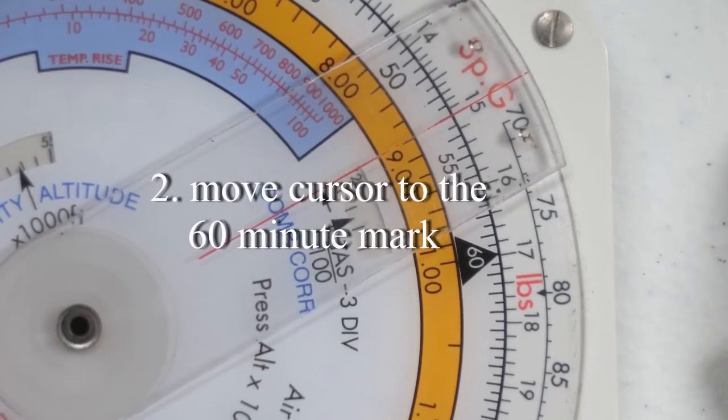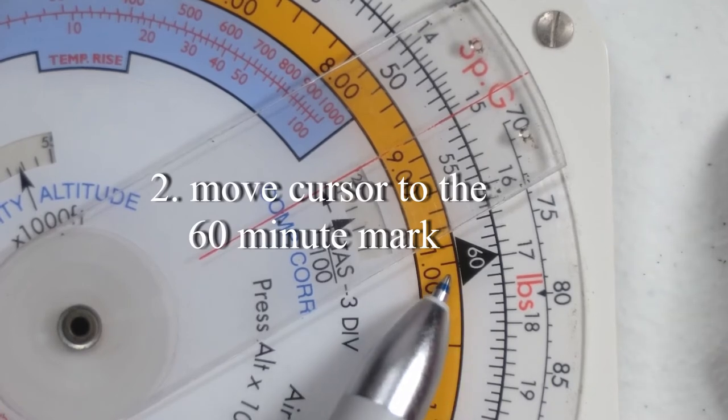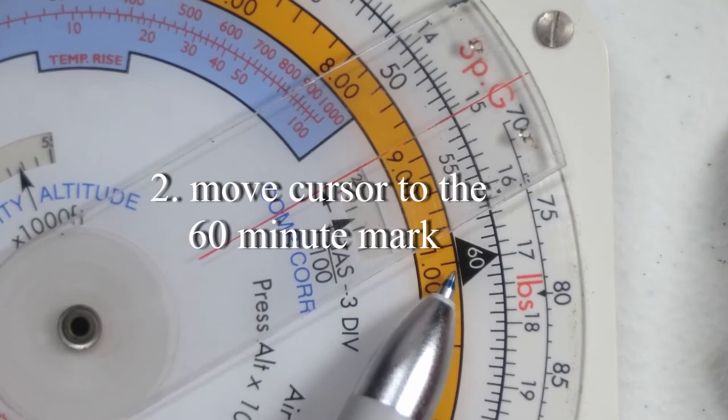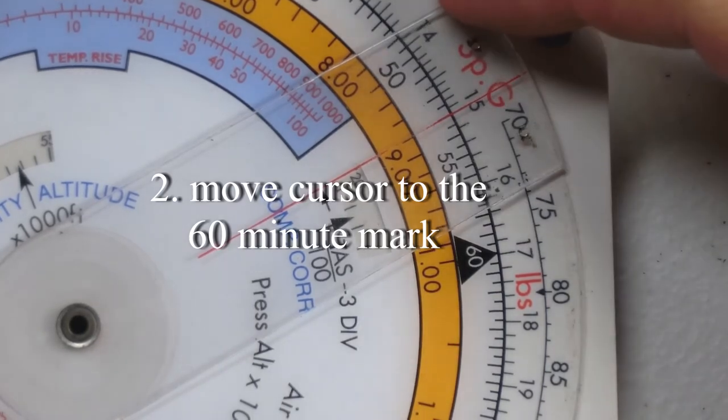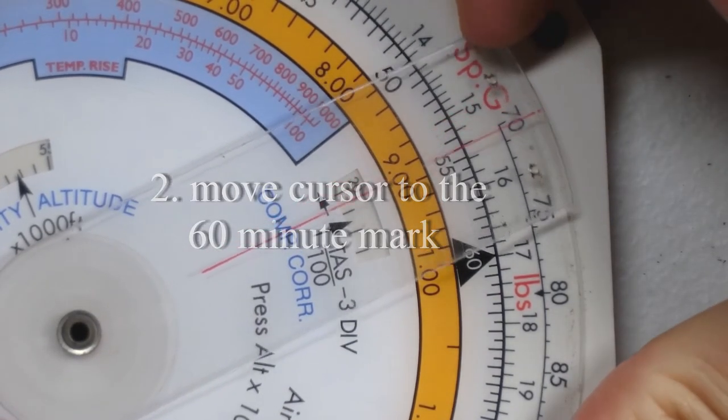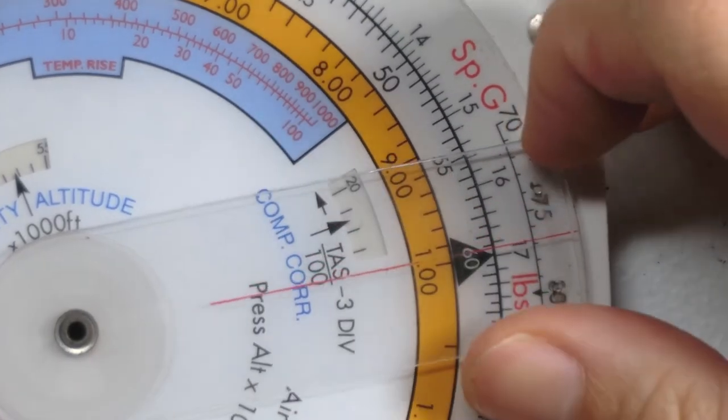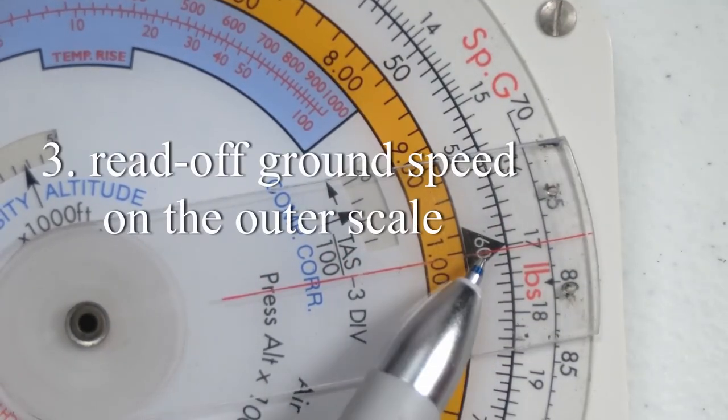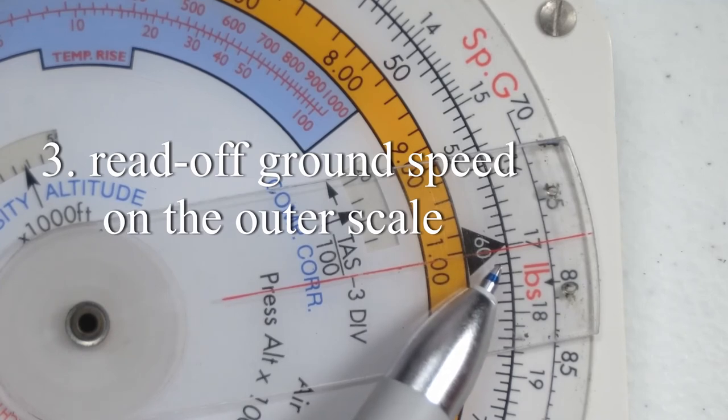We move the cursor over to the 60 minute mark because speed is always given as distance over 60 minutes. So I am going to move the cursor now without moving anything else over to 60 minutes. And in 60 minutes I would cover a distance of 170 nautical miles. So again I am pressing down on the CRP5.